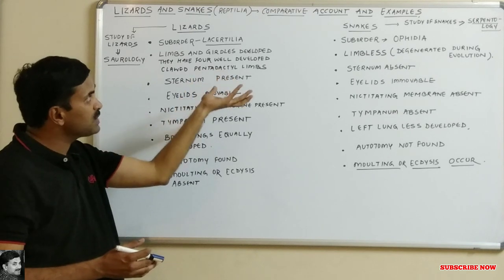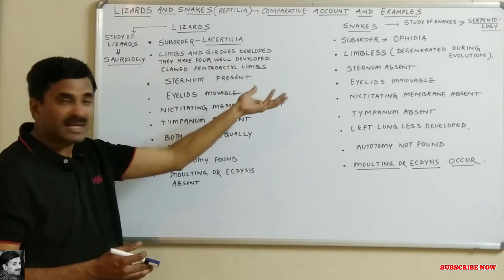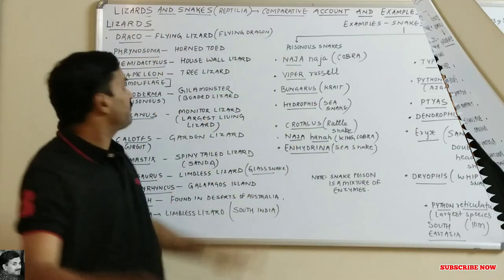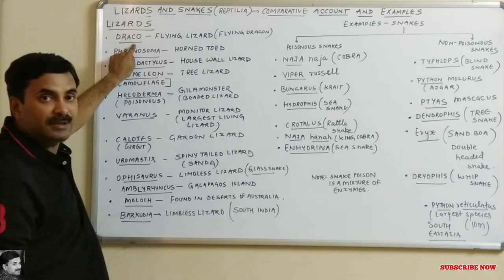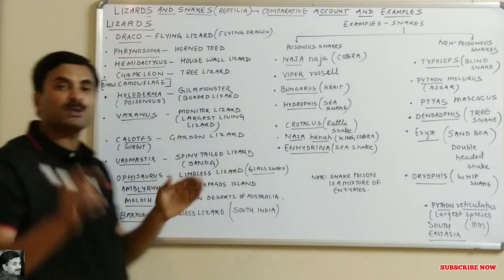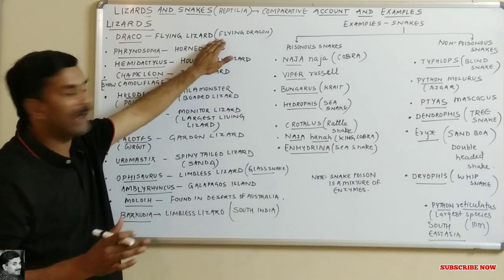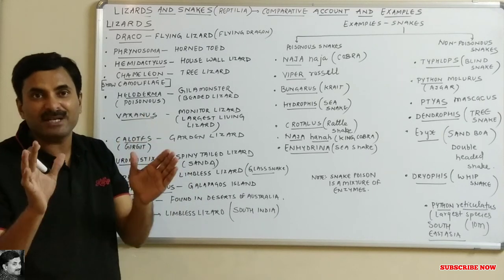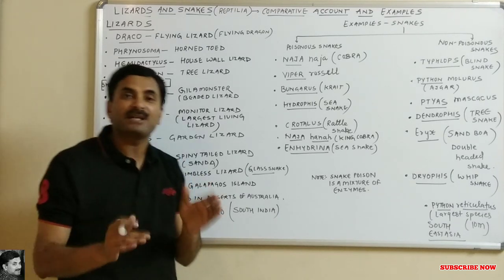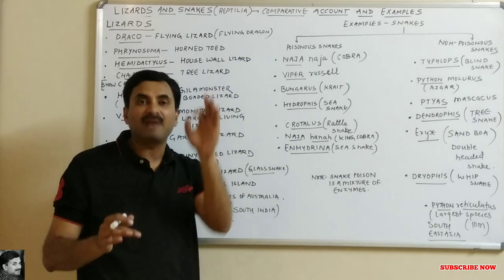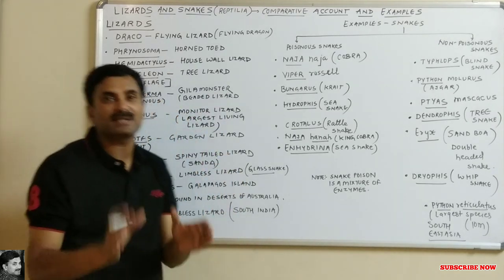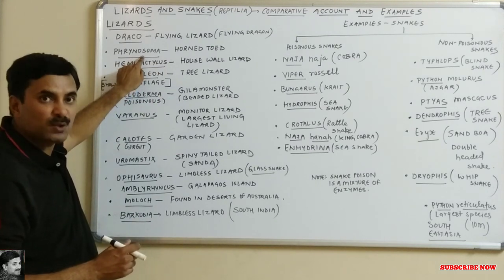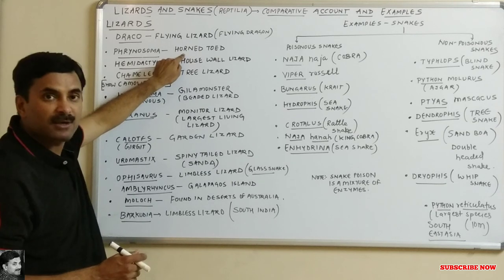Now let's discuss examples of lizards and snakes. The first example of a lizard is Draco, also called the flying lizard or flying dragon. You must remember that it never actually flies — though it is named flying dragon, it only glides. It glides with the help of a skin fold known as the patagium. The second example is Phrynosoma, also called the horned toad.